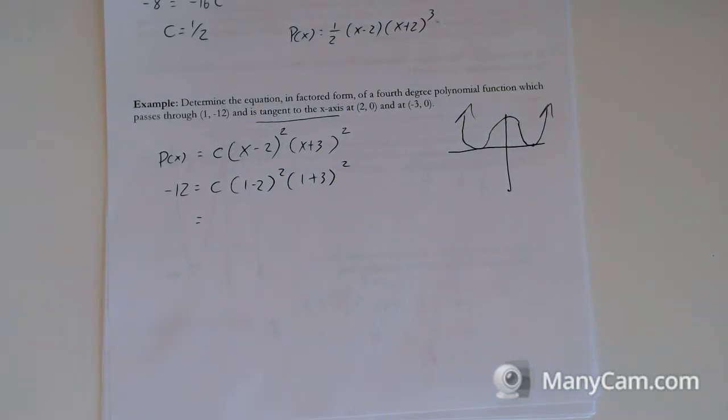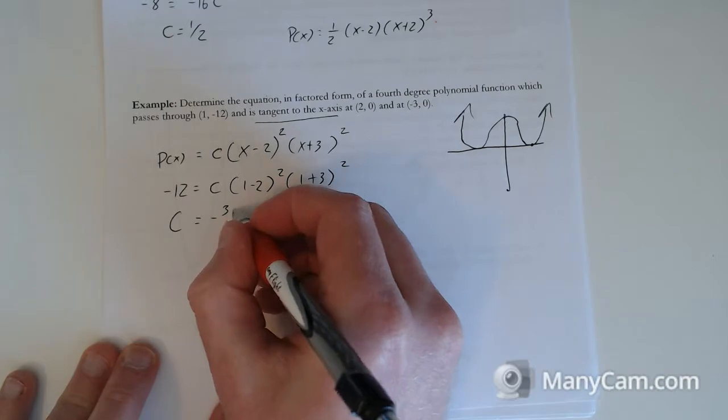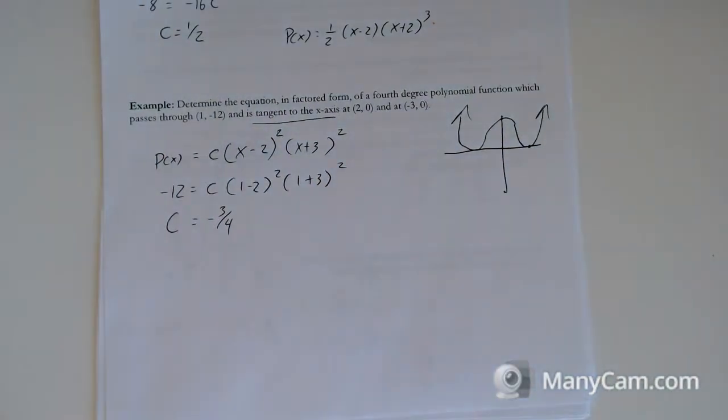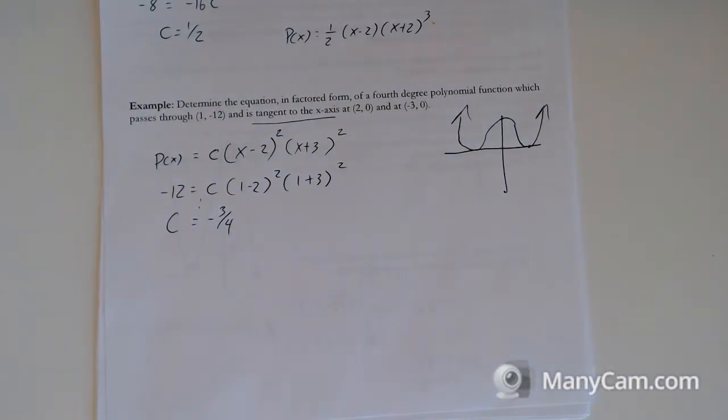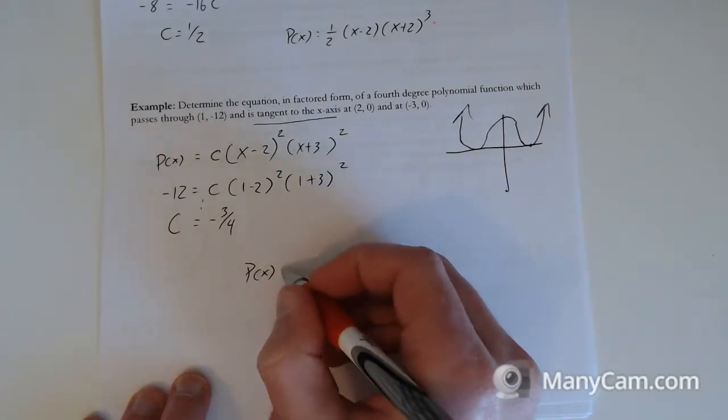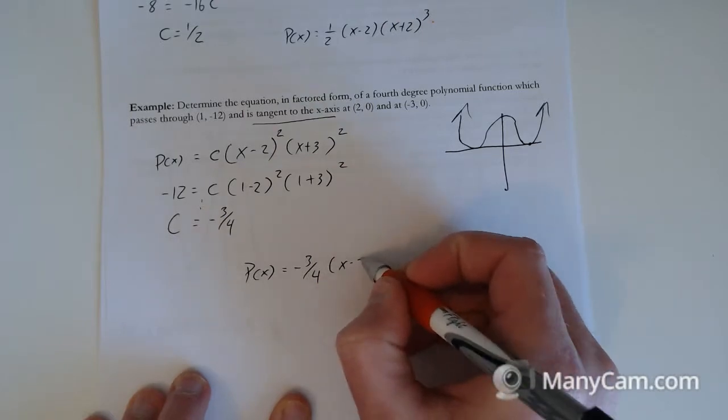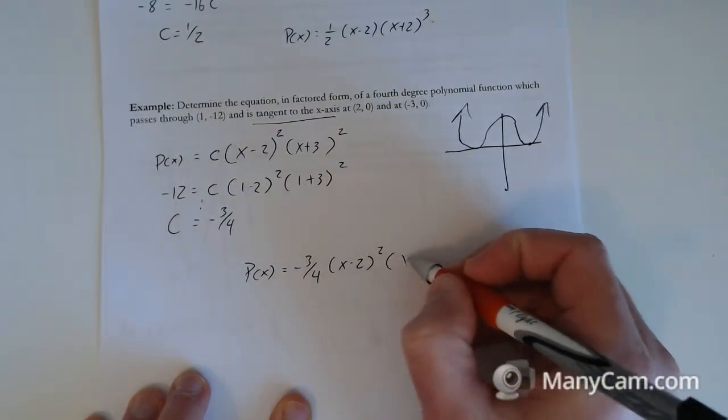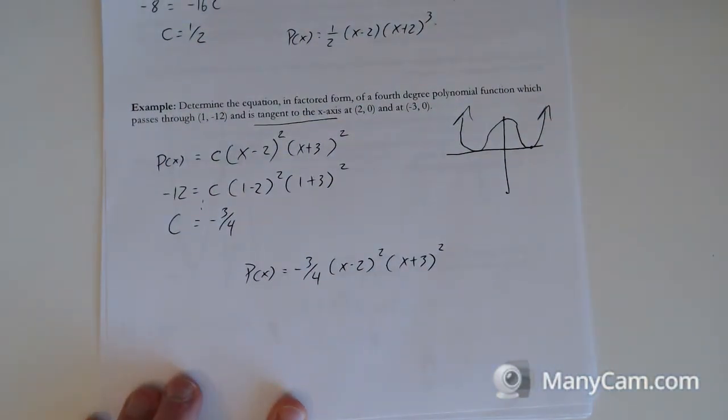You probably could solve this, pause this, and solve this on your own first. You should end up with a c value of negative 3 quarters, once you get down there. I assume we can do that part. Just expand, then divide, and then solve. So in this case, our polynomial function is negative 3 quarters times x minus 2 squared times x plus 3 squared. Pretty easy. We're all going to ace this test.